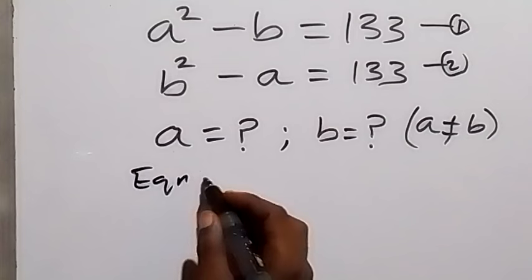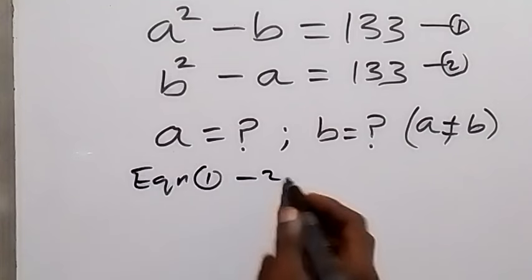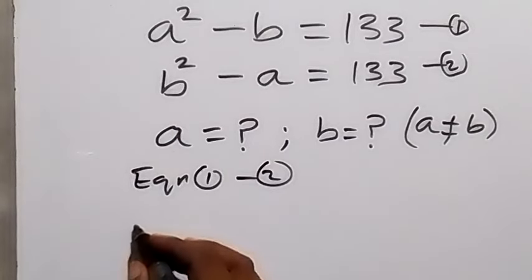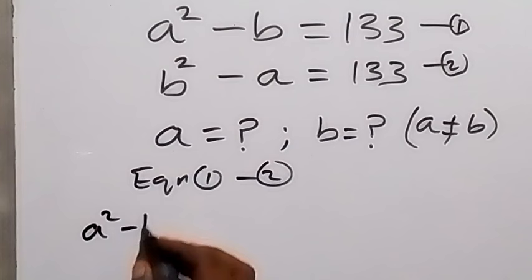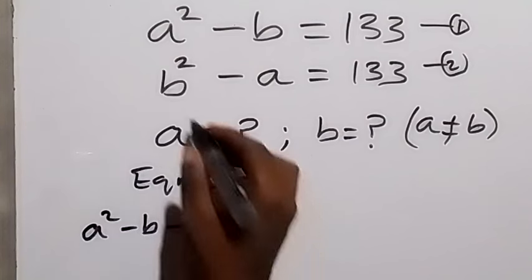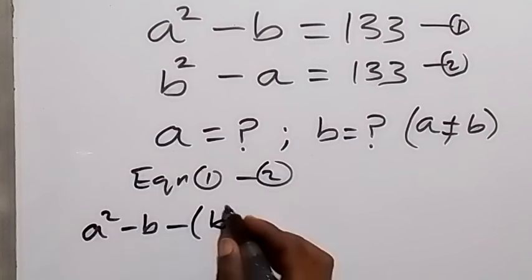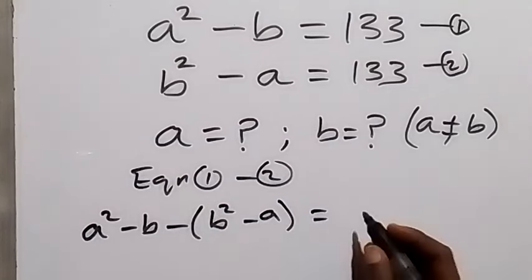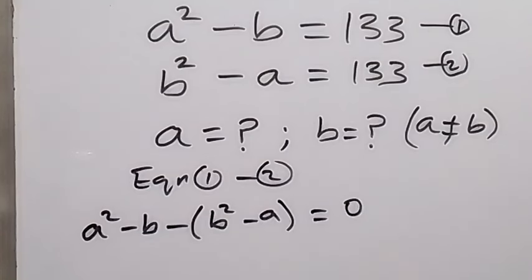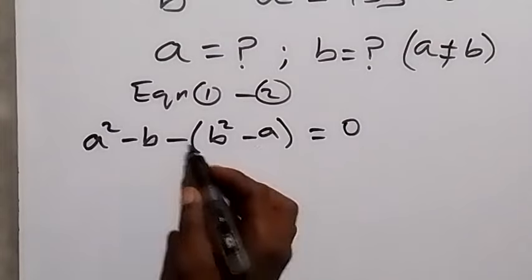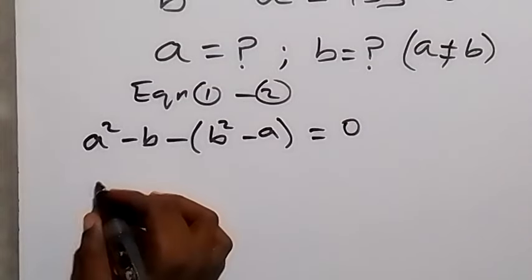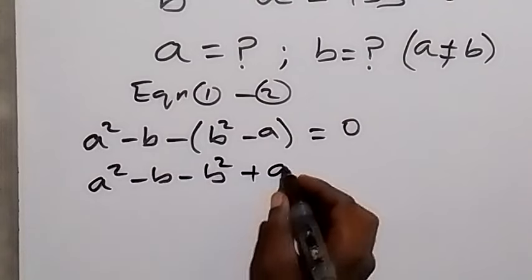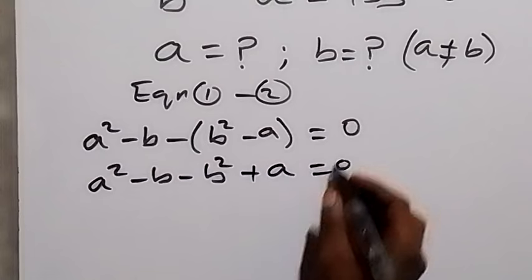Let's subtract equation 1 and equation 2. So equation 1 minus equation 2: on the left we have a squared minus b, then minus equation 2, that's b squared minus a, then equals 133 minus 133, which is 0. Opening the bracket, we have a squared minus b minus b squared plus a equals 0.